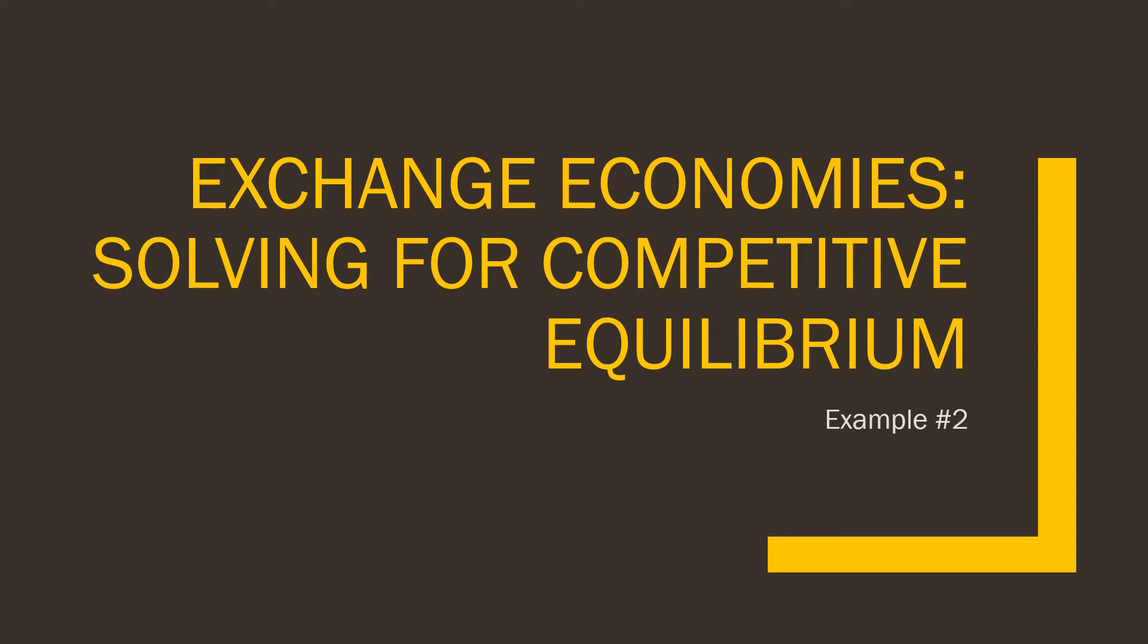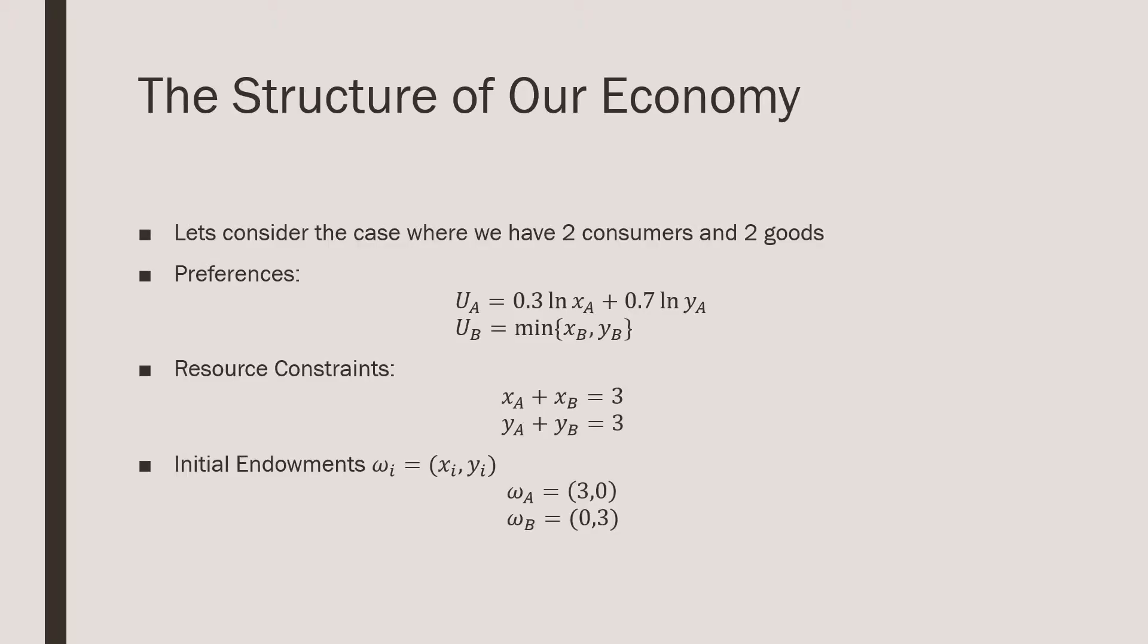Hey guys, welcome to our second example in our practice series on solving for a competitive equilibrium. In this video, we're going to consider the case where we have a consumer which has some sort of curvature to his preferences and the other one which has perfect complements as his preferences.